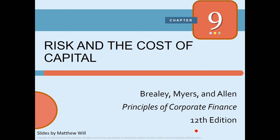Welcome to Week 7 lecture videos. Today's topic is risk and the cost of capital, covering Chapter 9. Long before the development of modern theories linking risk and return, smart financial managers adjusted for risk in capital budgeting. They knew that risky projects are, other things equal, less valuable than safe ones. Traditionally, the risk of assets has been adjusted in two ways: either by adjusting the rate of return or by adjusting the cash flows.